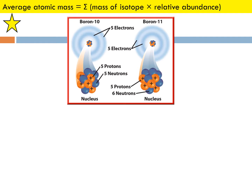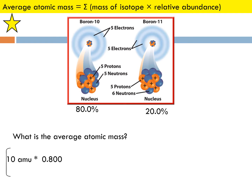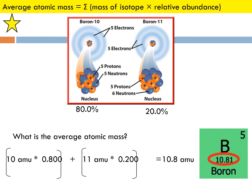Boron — boron-10 and boron-11. Boron is number 5 on the periodic table: 5 protons, 5 electrons. The only difference is boron-10 has 5 neutrons (5 plus 5 is 10), and boron-11 has 6 neutrons (5 plus 6 is 11). With 80% for boron-10 and 20% for boron-11, what is the average atomic mass? So 10 times 0.8 plus 11 times 0.2 gives you 10.2 AMU. We have 10.81 on the periodic table — good enough.